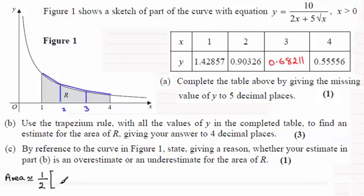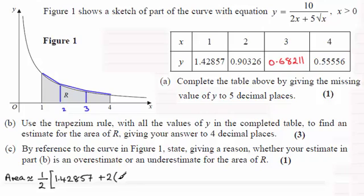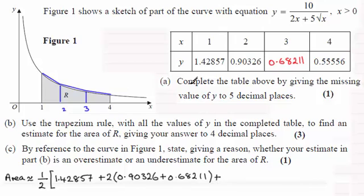Then we multiply by the height of the first strip, which is the first y value: 1.42857. Then we add 2 times the sum of the middle heights. There are two middle values here: 2 times 0.90326 plus 0.68211. Then we add the last height, the y value when x equals 4, which is 0.55556.